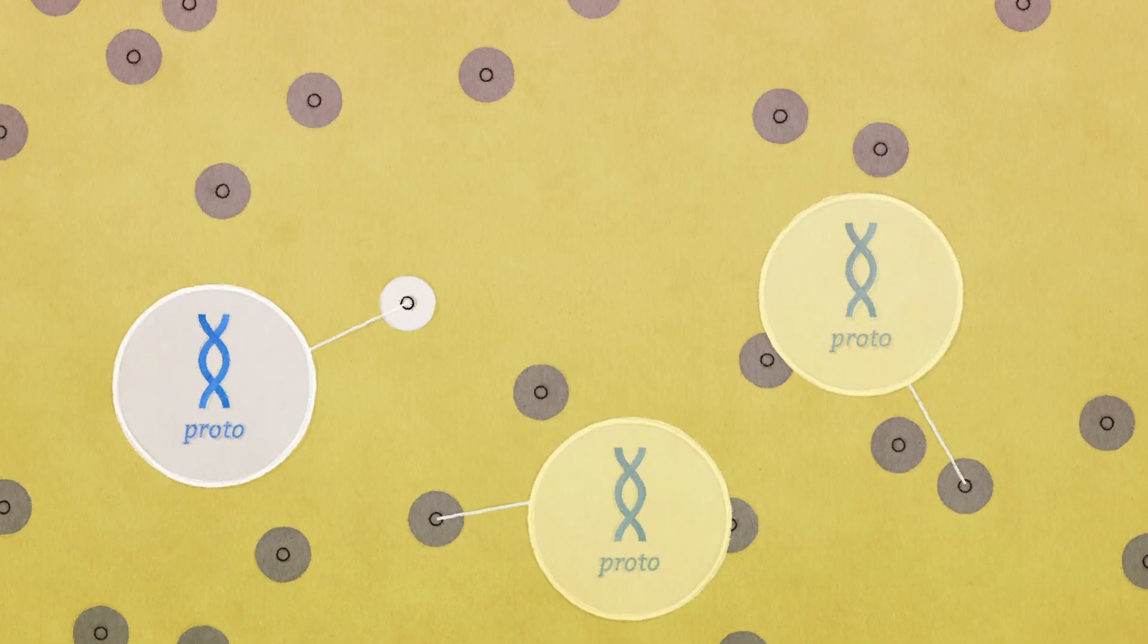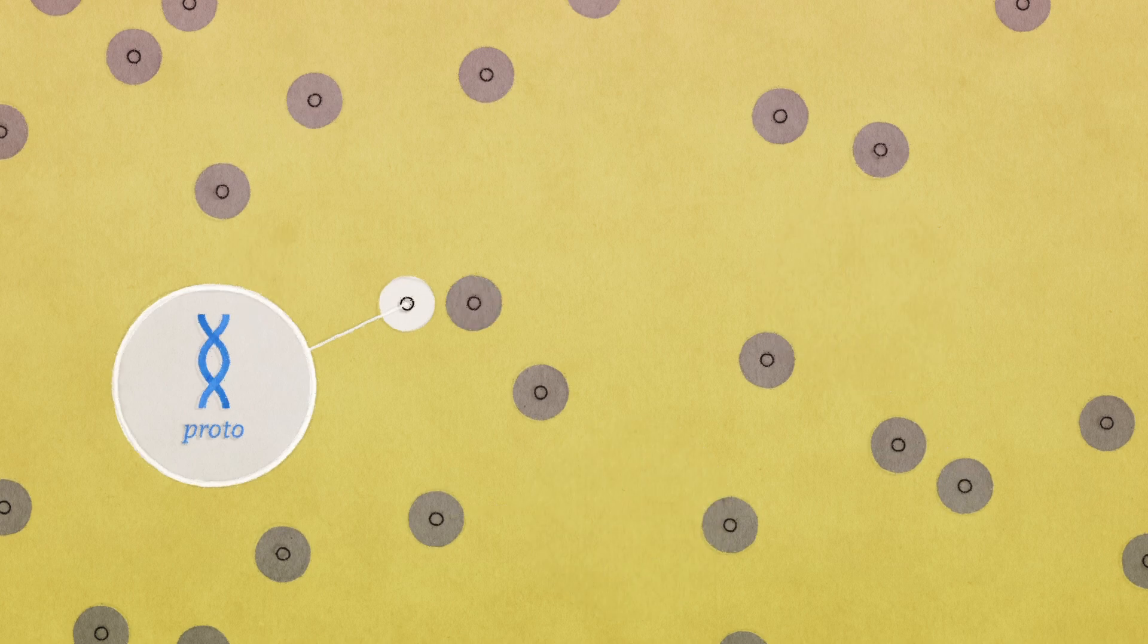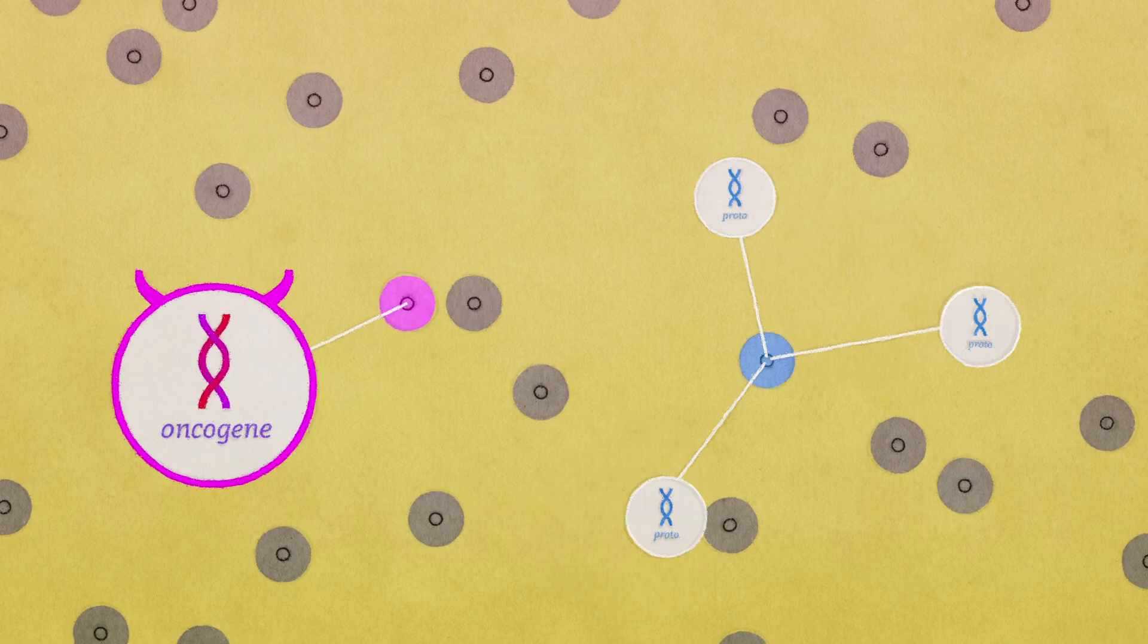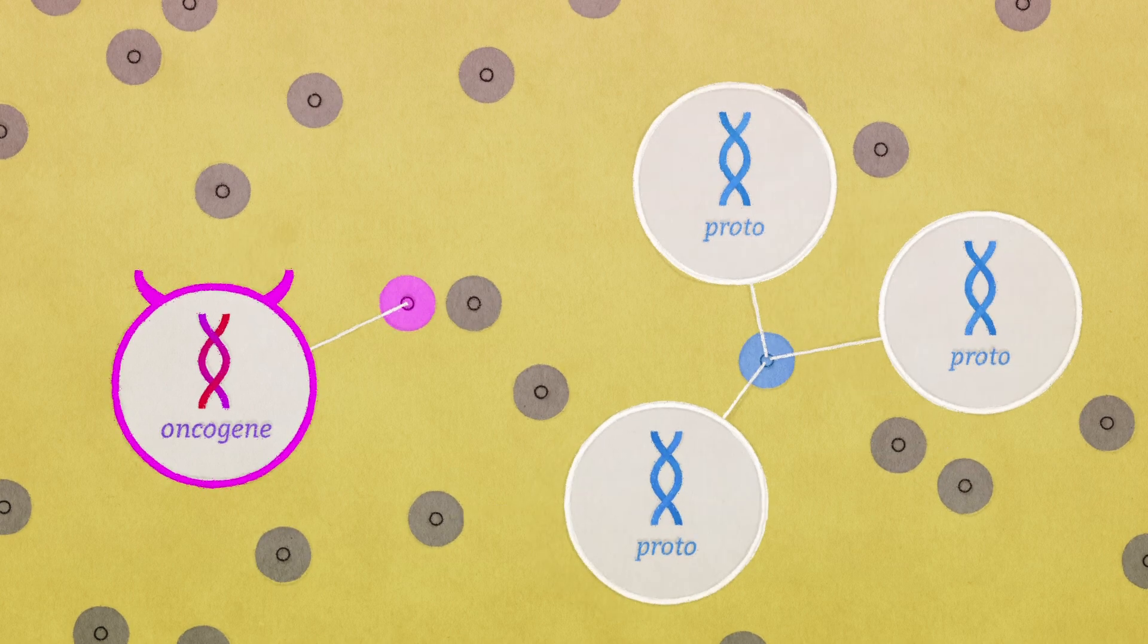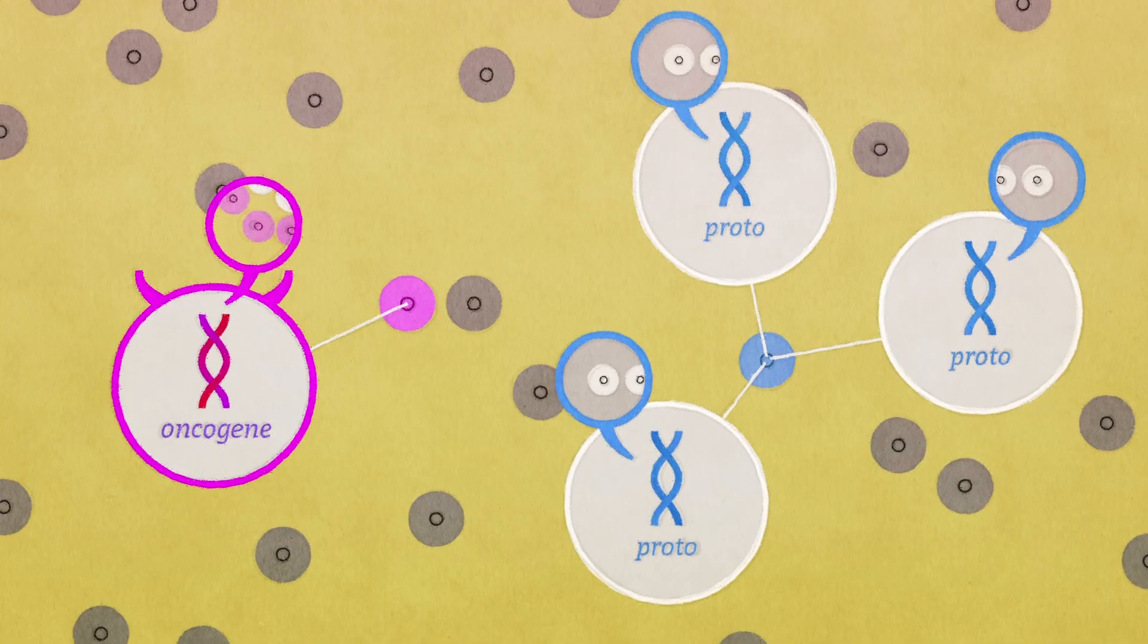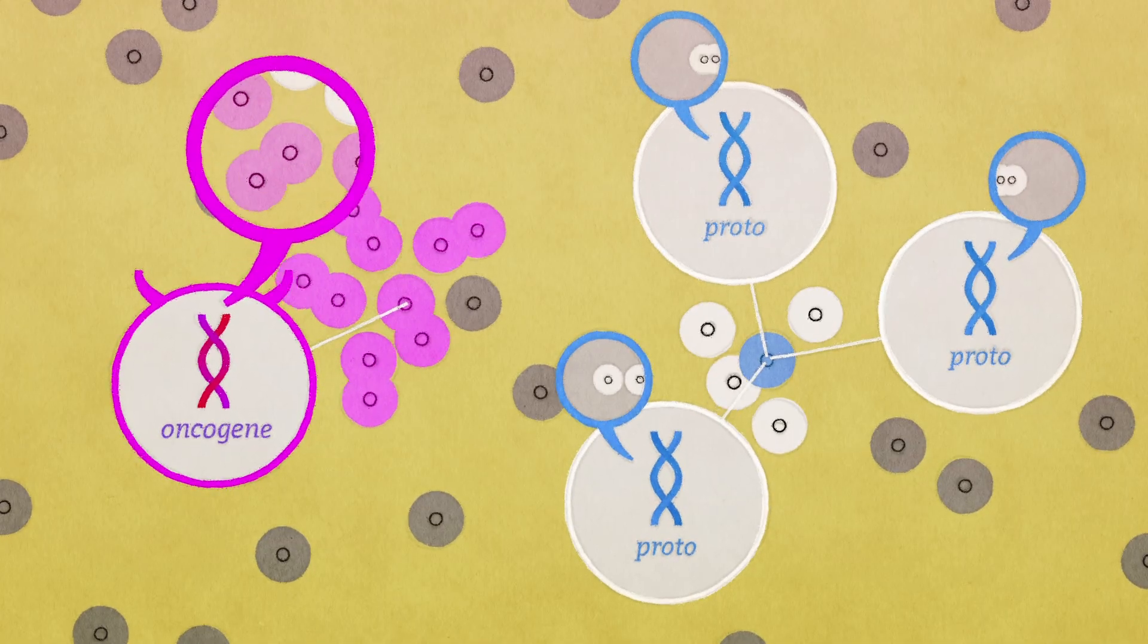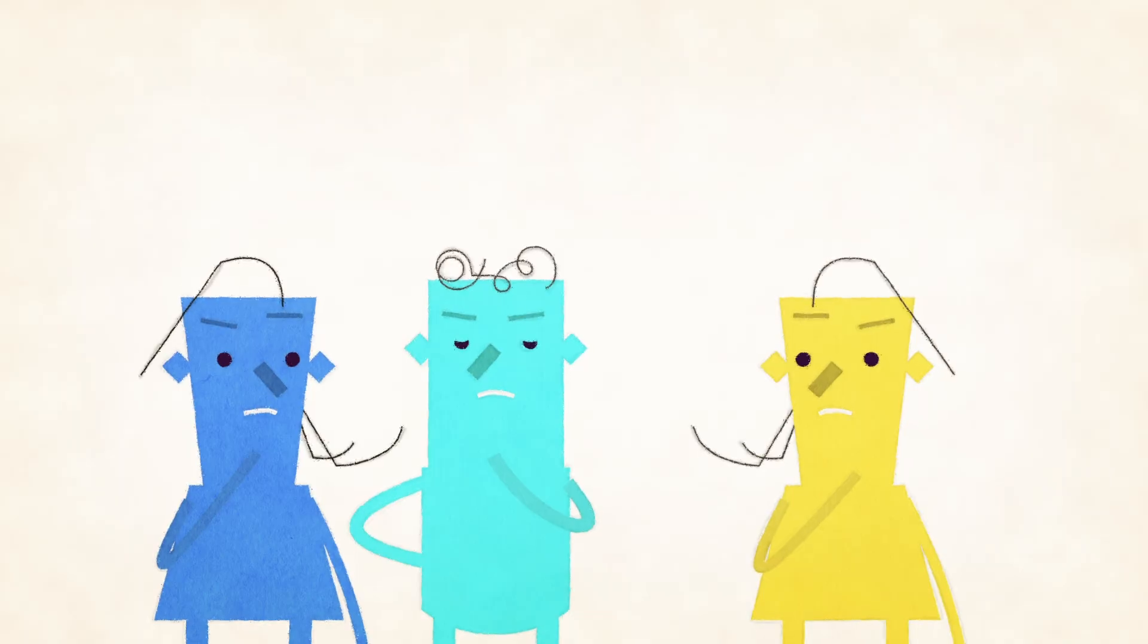Most cells have proto-oncogenes that help them grow. When a proto-oncogene mutates, or there are too many copies of it, it can become a permanently active oncogene with cells that grow out of control.